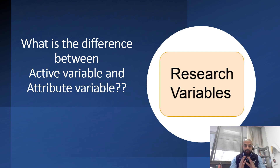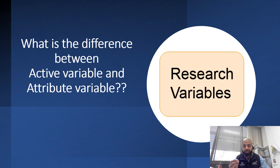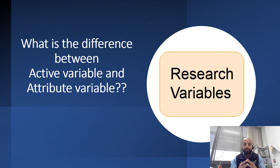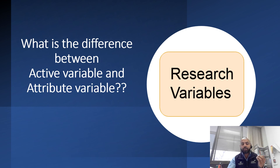In a causation study, or a study that examines association, there is often a controlled experiment. In a controlled experiment, the independent variable may be introduced or manipulated either by the researcher or by someone else providing the service. In such cases, there are two sets of variables: active variables and attribute variables. In today's video, I will take up an example to show you what these variables mean and how you can identify them in your research.